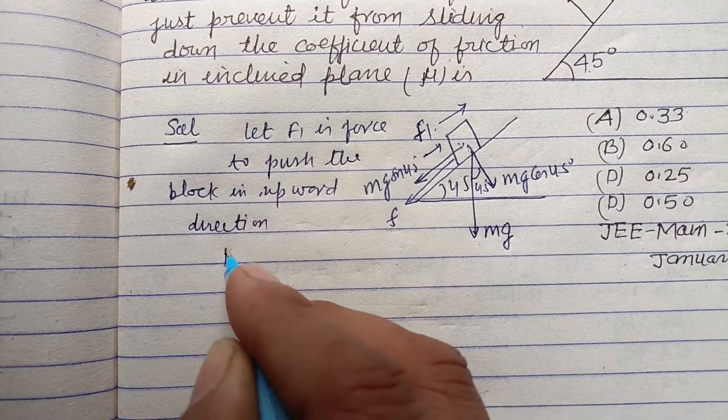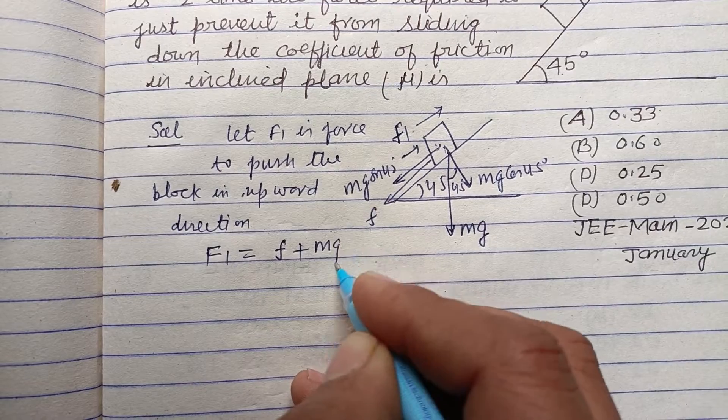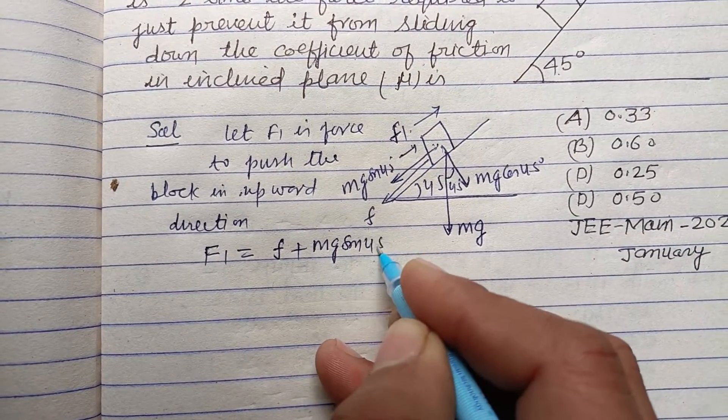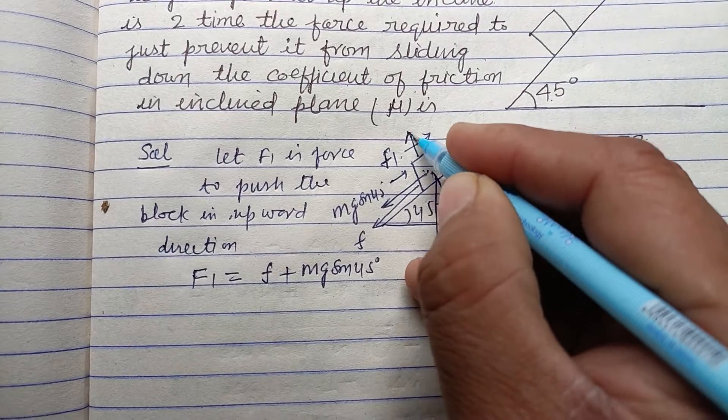Therefore F1 is force to push the block in upward direction. F1 equals Mg sin 45 in upward direction. Therefore F1 equals mu N plus Mg sin 45.